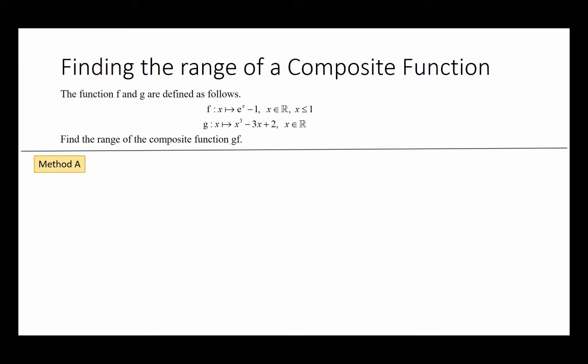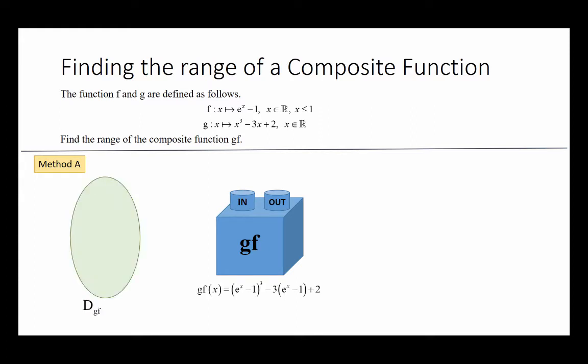There are two methods to be used to find the range of a composite function. For Method A, we can see the composite function as one single machine that will act on values that come from the domain of gf, which we know is the same as the domain of f — any value that is less than or equal to 1. So there are a few examples of values that can be found in this domain, such as 1, 0, negative 1, and so on.